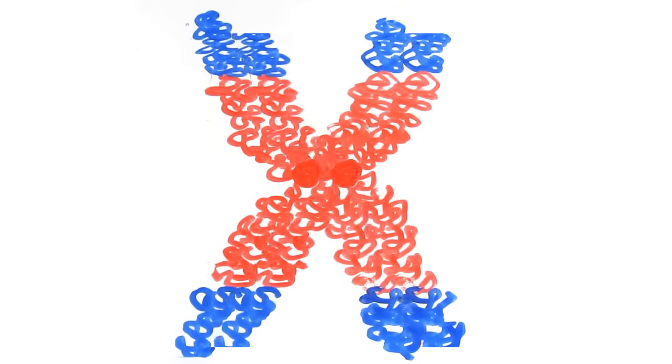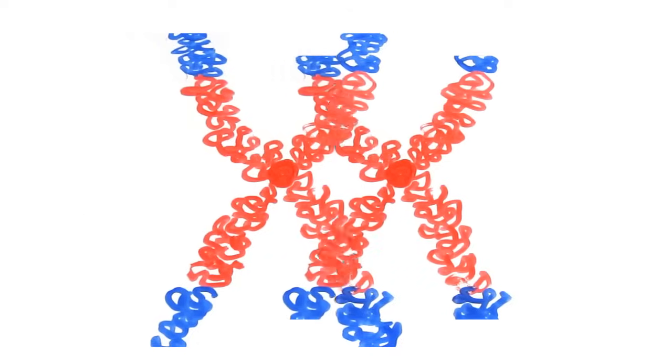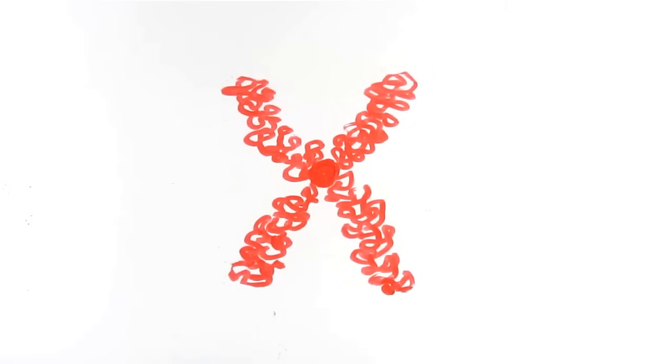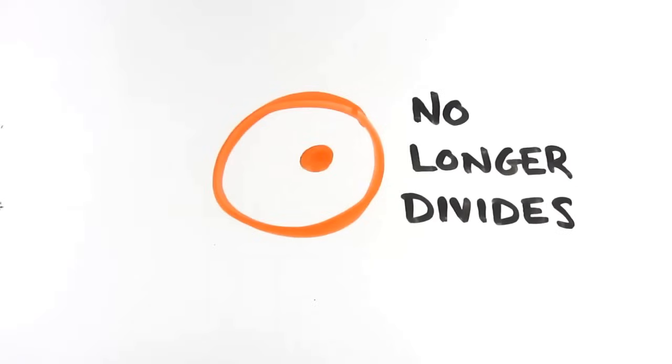But every time our cells divide, these telomeres become shorter and shorter until eventually, they've been entirely stripped away. At which point, the cell no longer divides.